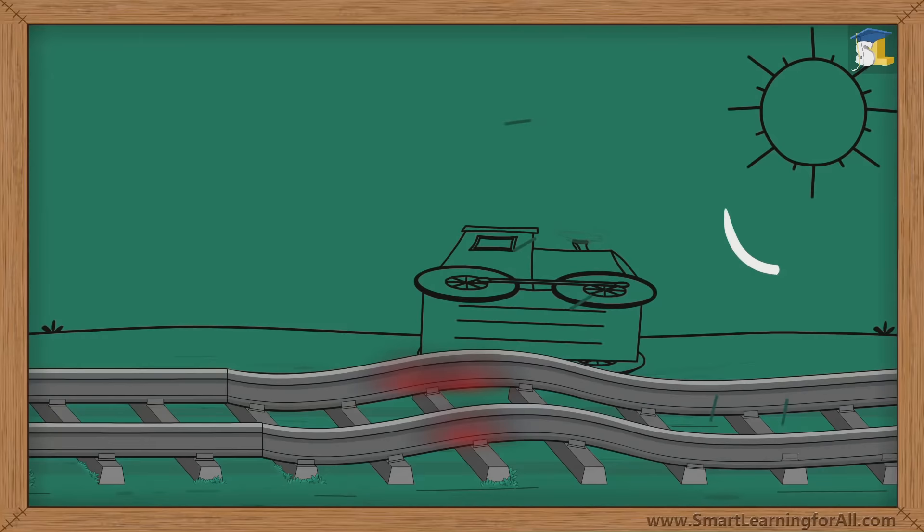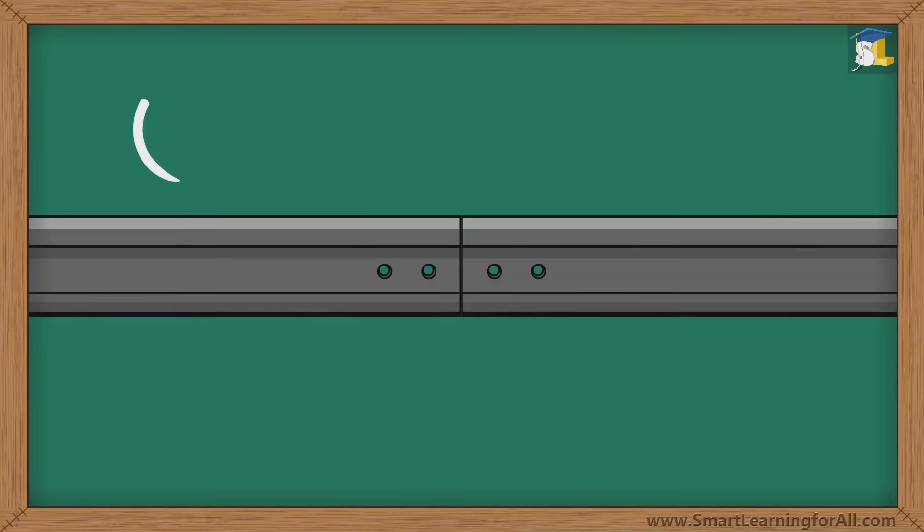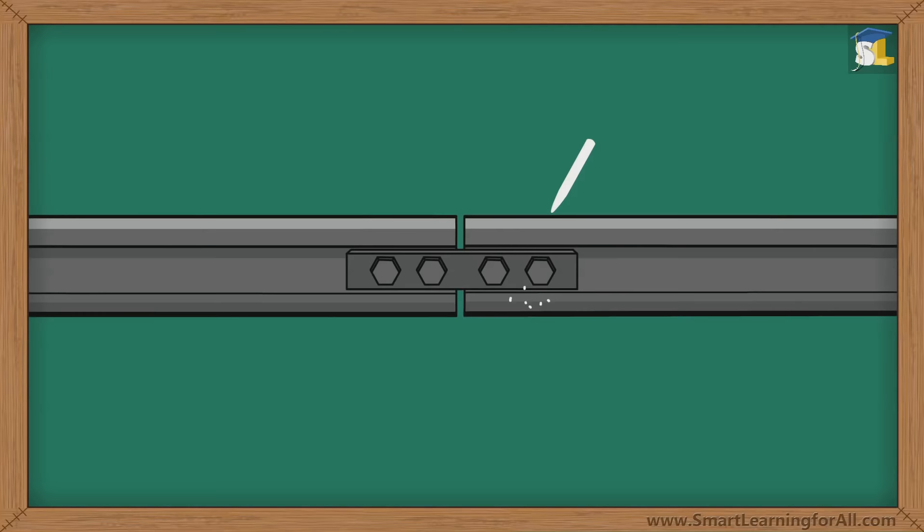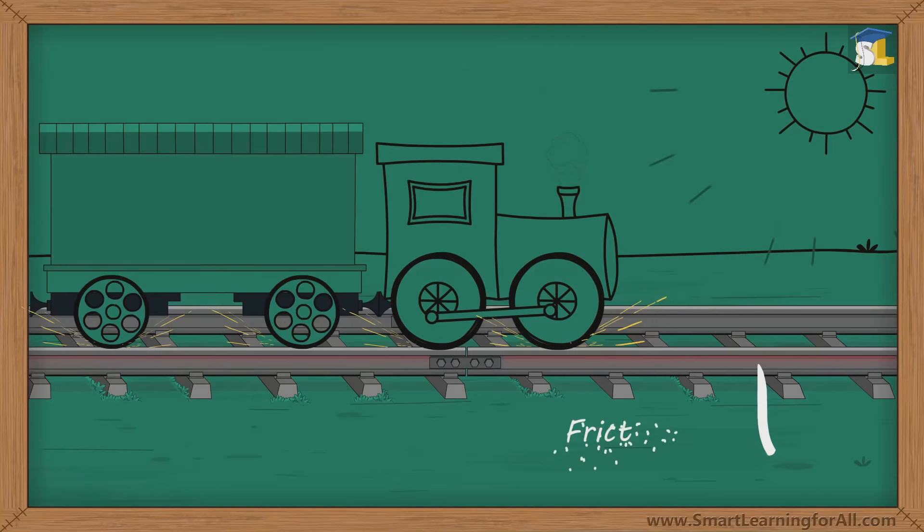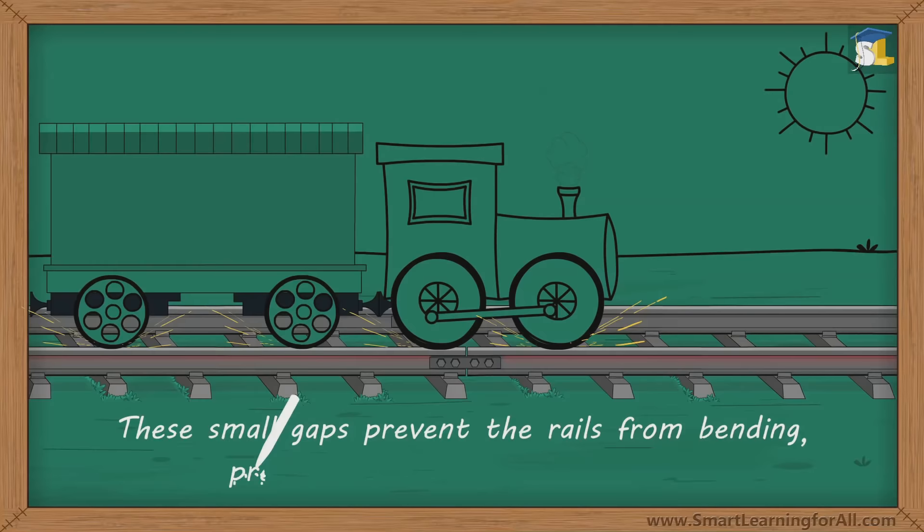To avoid this, the rails are not joined together firmly. Instead, each rail is connected to the other in such a way that a small gap is left in between them. These small gaps provide space for easy expansion of the rails, which happens during summer as well as due to continuous friction between the train wheels and the rails. Hence, these small gaps prevent the rails from bending, preventing any kind of accidents.